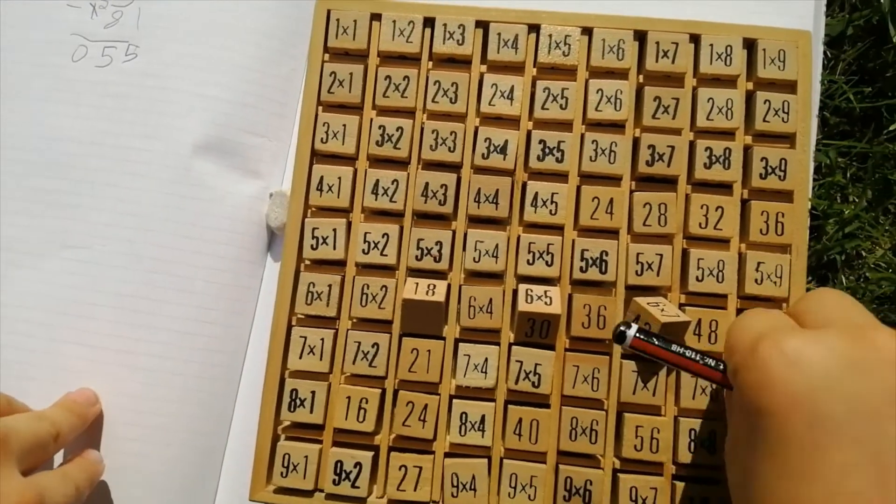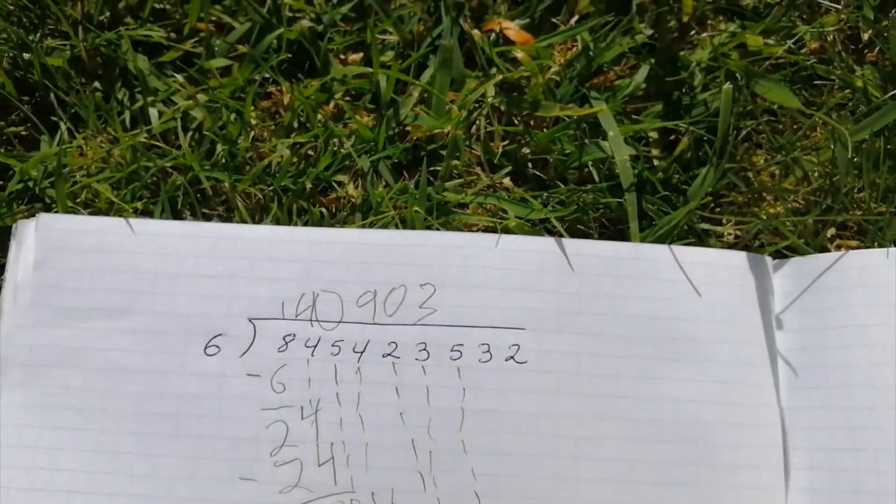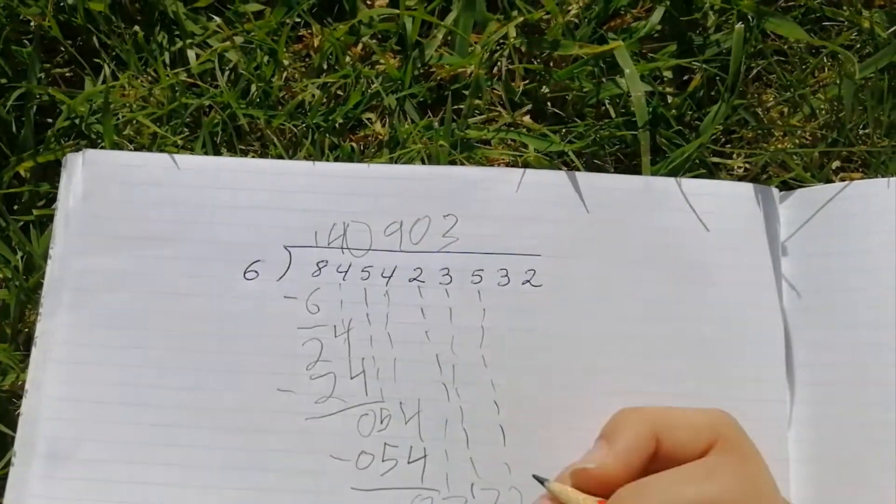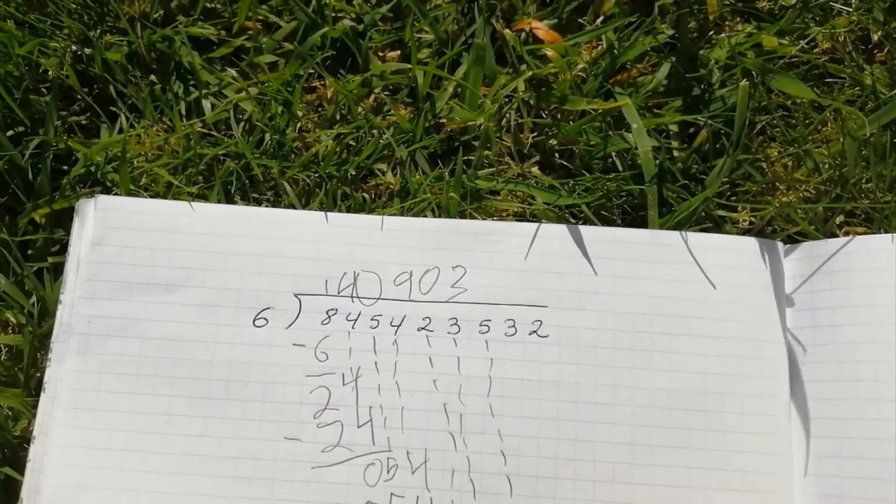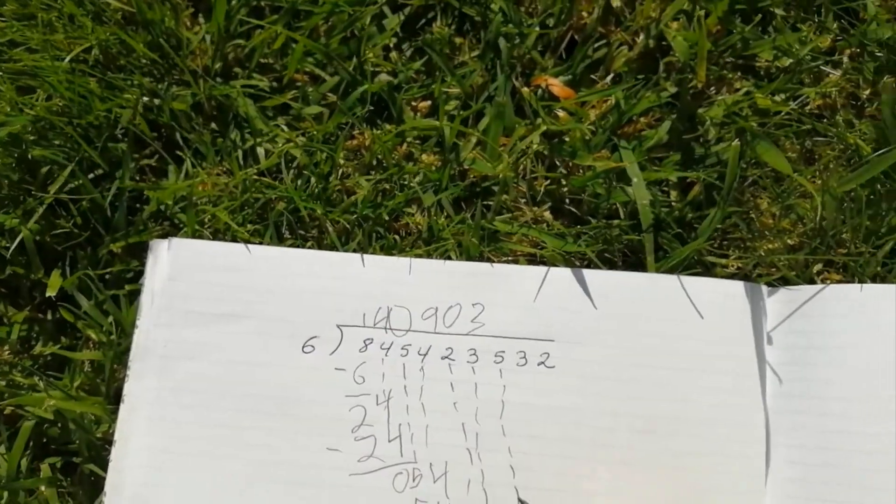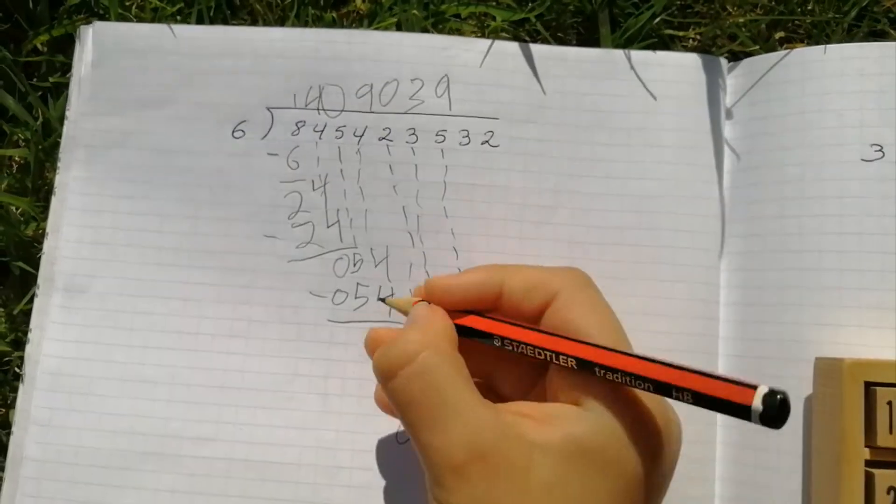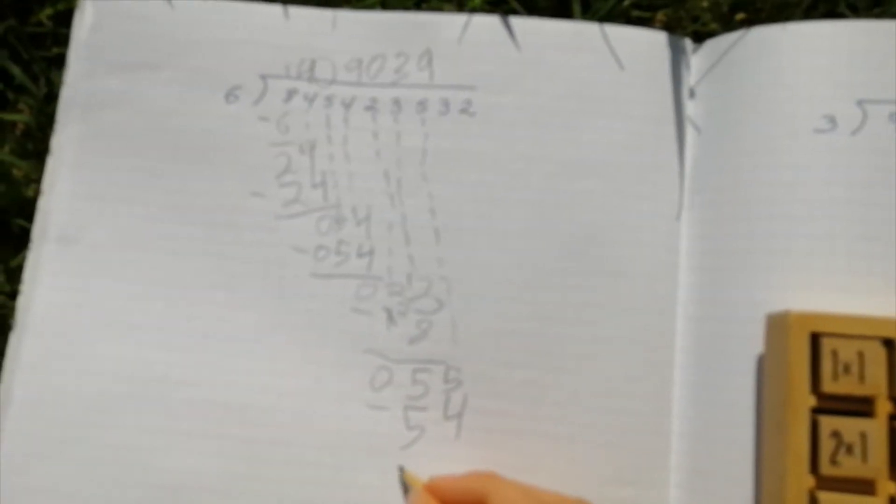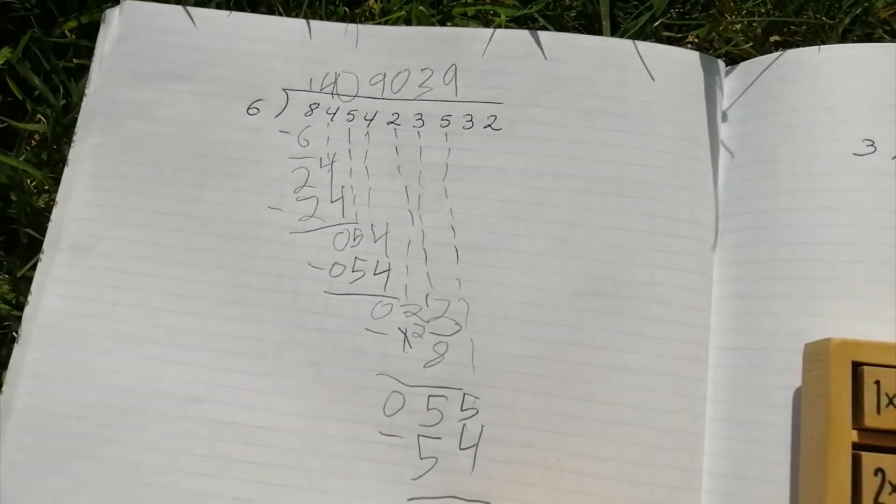Six. How many sixes are in fifty-five? That's a big number. There's nine sixes. So put nine here. And six times nine is fifty-four. So put minus fifty-four equals one.